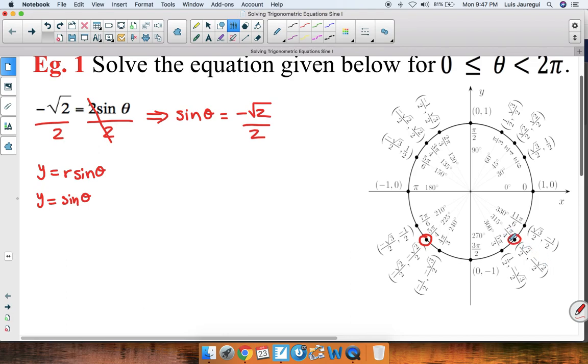Now we're looking at the angles corresponding to that y coordinate. In this case we have that one of the angles equals 5π over 4 and the other angle equals 7π over 4. So those are our two solutions for this equation. Theta could be either 5π over 4 or 7π over 4.